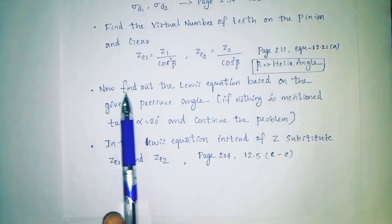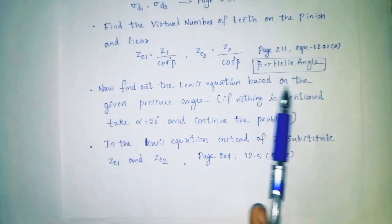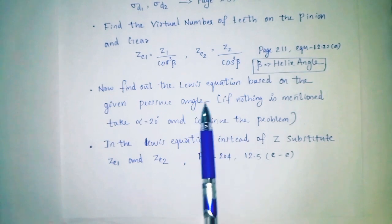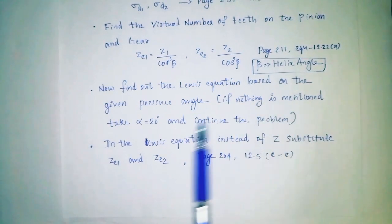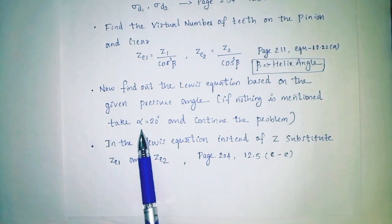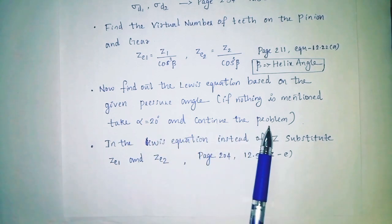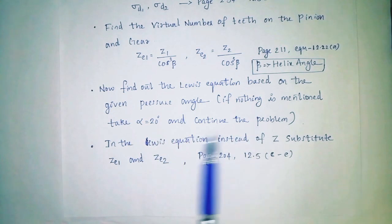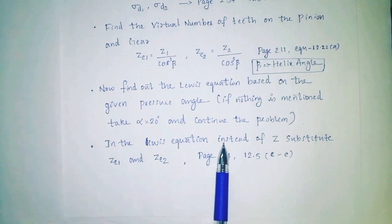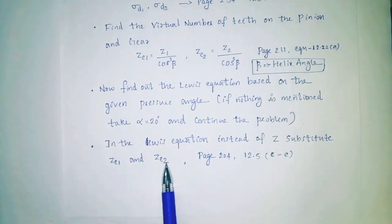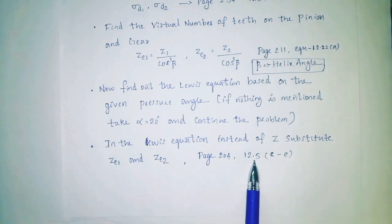Find out the Lewis form factor Y based on the given pressure angle. If nothing is mentioned, take alpha equal to 20 degrees and continue the problem. In the Lewis equation, instead of Z, substitute ZD1 and ZD2. Reference: page 204, table 12.5, column C2E.